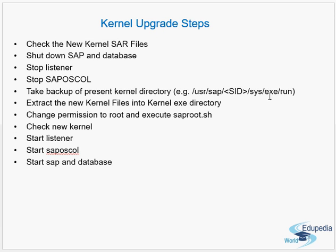Take a backup of the current exe directory first. Then extract the new kernel files into this executable directory. Whatever SAR or zip files you have downloaded, unpack them and copy all those files into this directory. You are essentially replacing the old set of files with the new set of files.